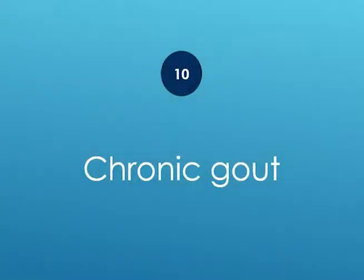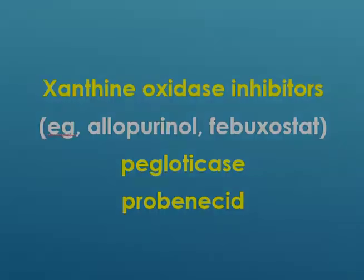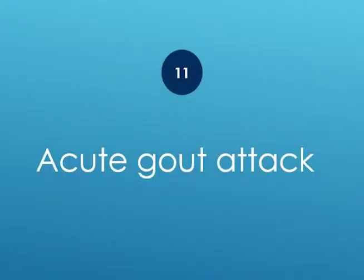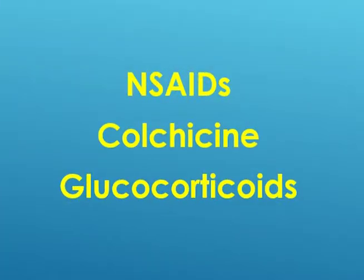How to treat chronic gout: xanthine oxidase inhibitors such as allopurinol, febuxostat, pegloticase, and probenecid. How to treat an acute gout attack: use NSAIDs, colchicine, and glucocorticoids.